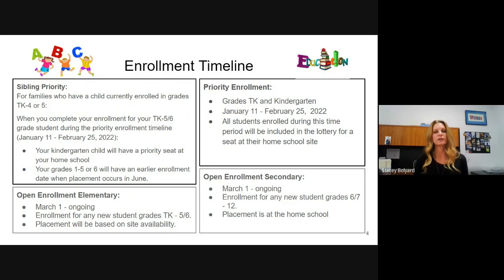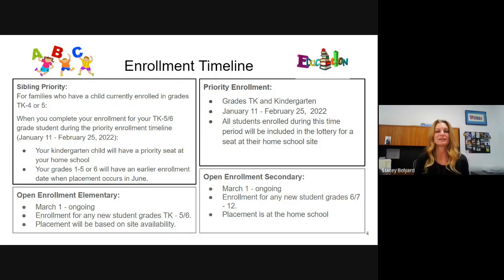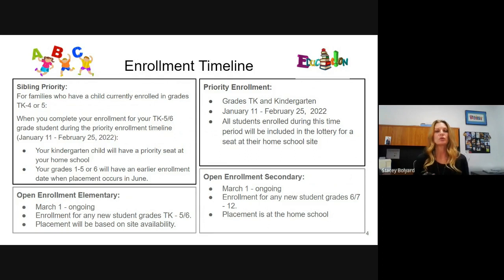If your new child is in grades 1 to 5 or 6 — the 5 or 6 depending on whether your area has a middle school starting at 6th grade or a junior high starting at 7th grade — the point is to have the kids at the same school. So if you have a student moving on to middle school, the new student wouldn't have a priority. But for your older student, you will have an earlier enrollment date when placements occur in June, earlier than the open enrollment which starts March 1st.